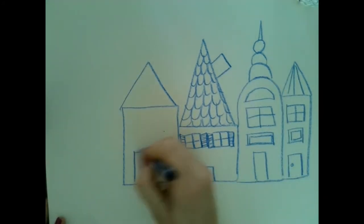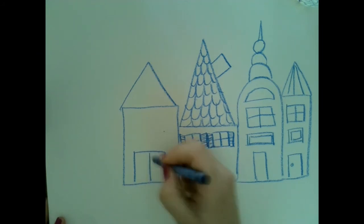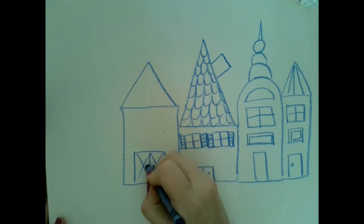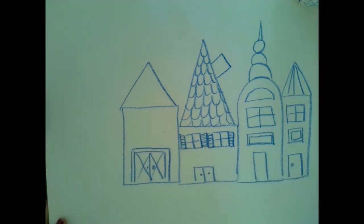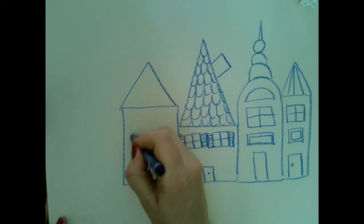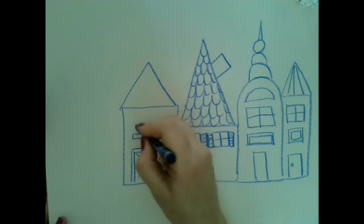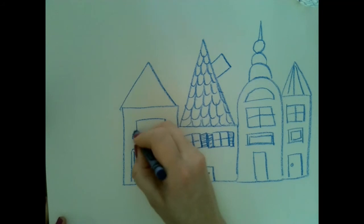Alright, maybe this one will have a big door with, I don't know, almost like a barn door, I'm thinking. I'm going to put a line around the door. Maybe this one has a little windowsill here. I'm thinking it has flowers in it. That's nice.